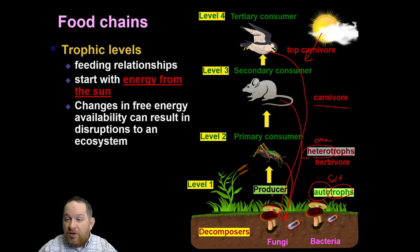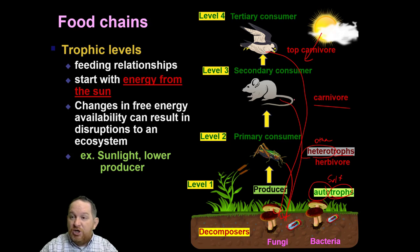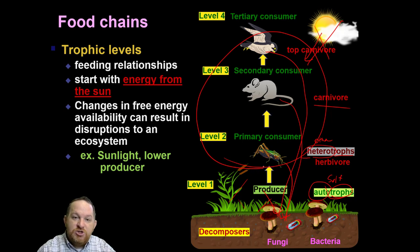Another important thing to consider in this food chain is that a change in the free energy can result in a disruption to this ecosystem. If there's a change in sunlight, this whole ecosystem can be thrown off. Or if something affects all the plants in an area, that's going to affect everything else in the food chain.